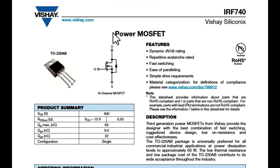Now let us talk about VGS and its impact. The RDS_on of the IRF740 is 0.55 ohm when VGS is 10 volt. If in your application you are driving this MOSFET with only 5 volt, your RDS_on will increase. You then need to check the power loss and temperature rise of the MOSFET. Also note that drain current is directly proportional to VGS — increasing VGS increases drain current and fully turns on the MOSFET. This is how you decide the trade-offs between drain-to-source voltage, VGS, RDS_on, and drain current.